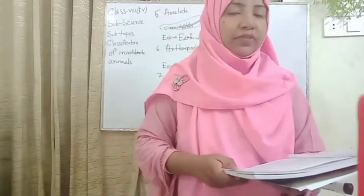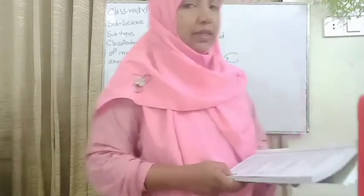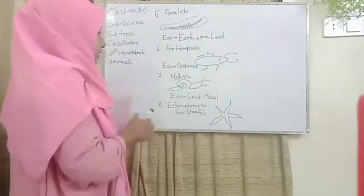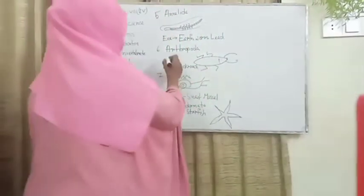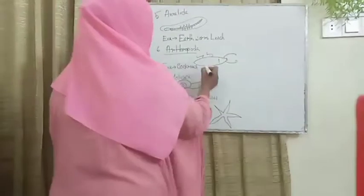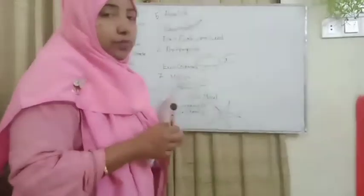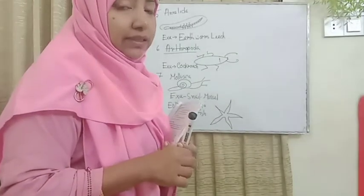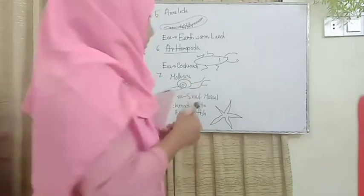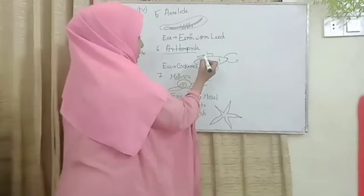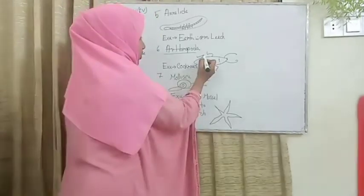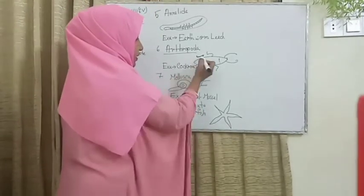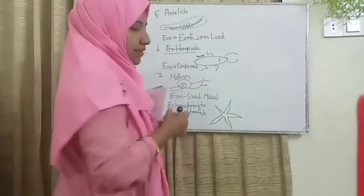The sixth phylum is Arthropoda. Arthropoda comes from Latin words: Arthro means segmented and poda means leg — so Arthropoda means segmented legs.